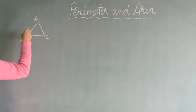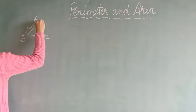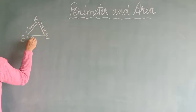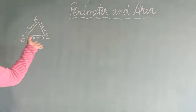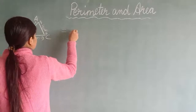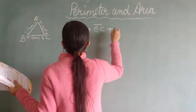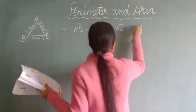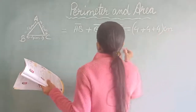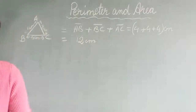This is the triangle ABC. The length of these sides is given as 4cm. All the sides are equal. If all the sides are of different lengths, we simply add the length of the sides. So the perimeter of the triangle will be AB plus BC plus AC. That is 4 plus 4 plus 4cm, and that is 12cm. So this is equal to 12cm. This is the perimeter of the triangle.